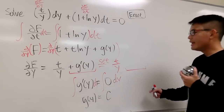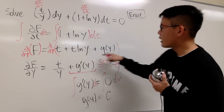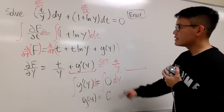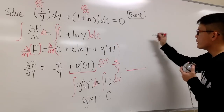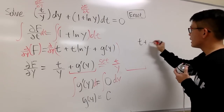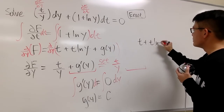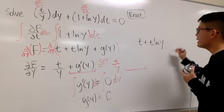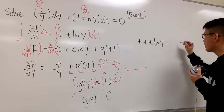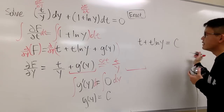And we are done. Since g of y is just a constant, the solution is F equals t plus t times ln y equals c.